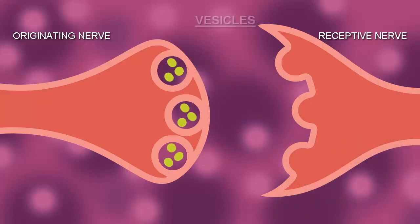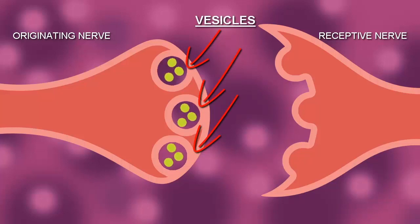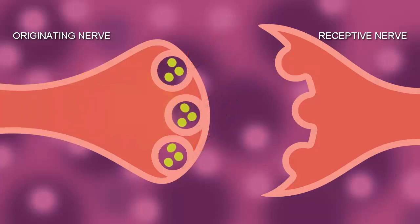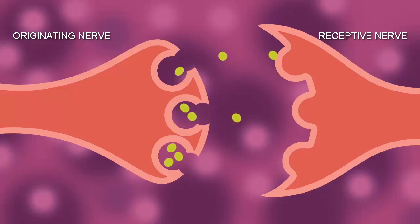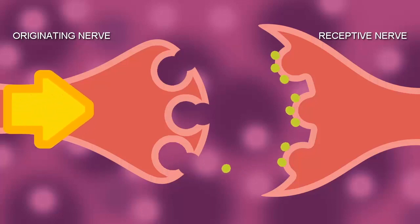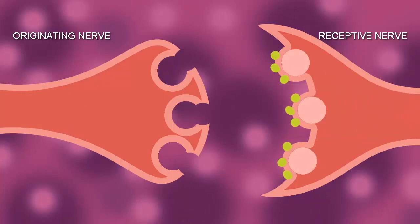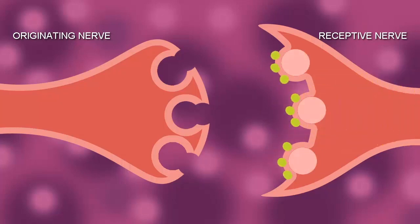The neurotransmitters are chemicals which are stored in the originating nerve in an area called the vesicles. A nerve transmission comes down the nerve and can cause a release of the neurotransmitter from these vesicles. The neurotransmitter flows across the synapse. The receptors on the other side of the synapse are activated by the neurotransmitter and then transmit that information to the next neuron.